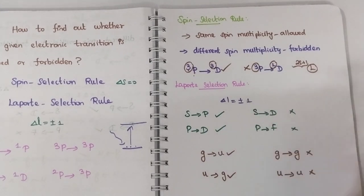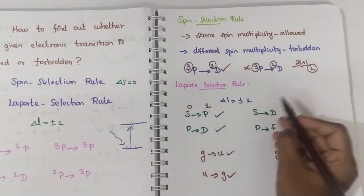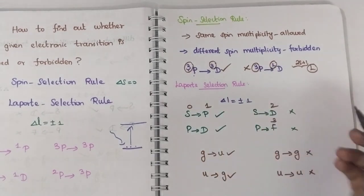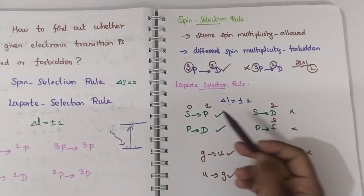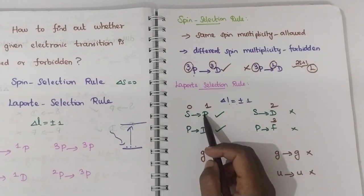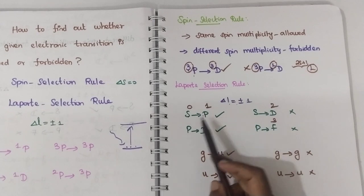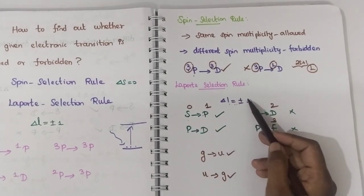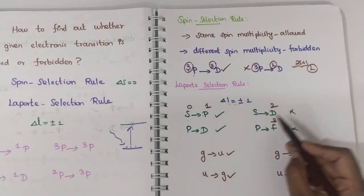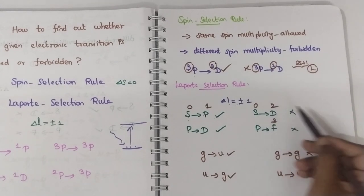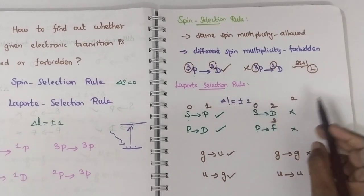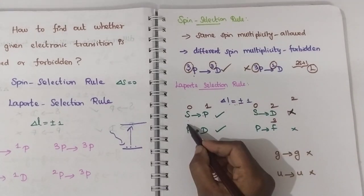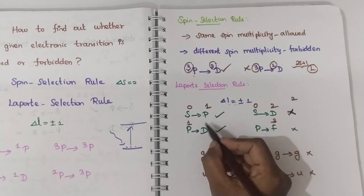The Laporte selection rule states that ΔL should be equal to plus or minus 1. The L values are: S=0, P=1, D=2, F=3. So for an S to P transition, the difference is 1, which is Laporte-allowed. But for an S to D transition, the difference is 2, so it is a forbidden transition because only plus or minus 1 is allowed.